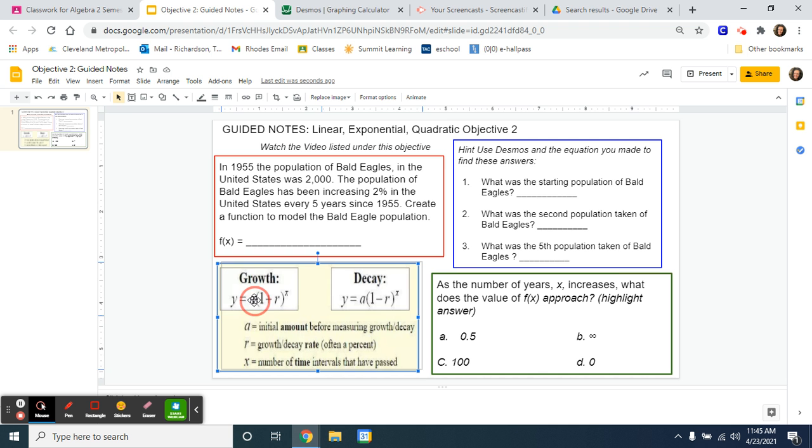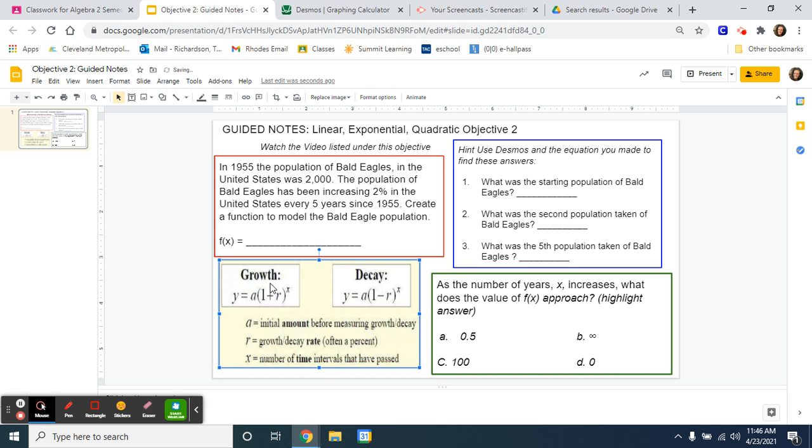We're going to start by figuring out what is my a, the a part of my equation. So down here it tells you, a is your initial amount. So what was my starting, my initial population? My initial population of these bald eagles was 2,000, so I'm going to start by putting 2,000.